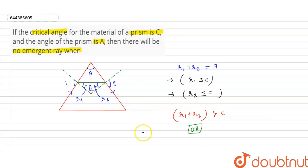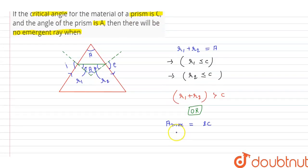We know that limiting value of angle of prism is equal to twice the critical angle. A max is equal to 2C. So no emergent ray will be there when A is greater than 2C. So these are the answers.